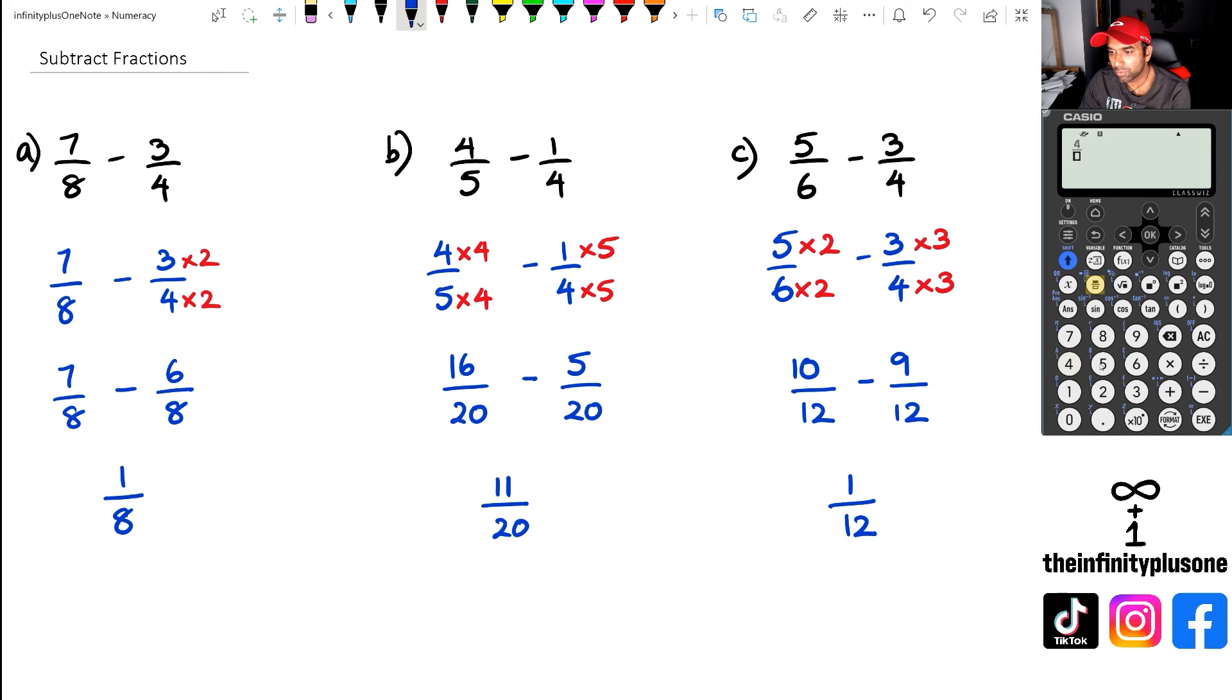And likewise, we can do 4 over 5 take away 1 over 4. Oh no, I've got to make sure I do that right. There we go. Move that cursor first, and then I'm going to go 1 over 4. I'm just going to put 1 over 4 like this. There we go. That's 11 over 20.